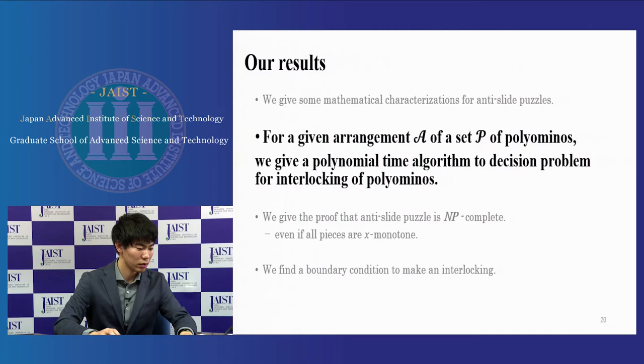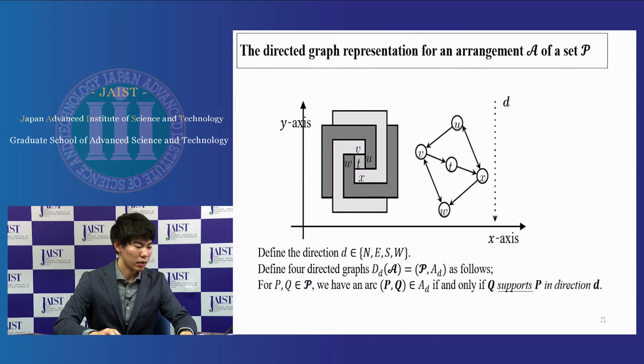This is a directed graph representation for arrangement A over set P. Define that the direction D is N, E, S, or W. Define the four directed graphs DDA as follows. For P and Q in P, we have an arc PQ if and only if Q supports P in direction D. Remark that we focus on the orthogonal polyominoes for fixed x-axis and y-axis.